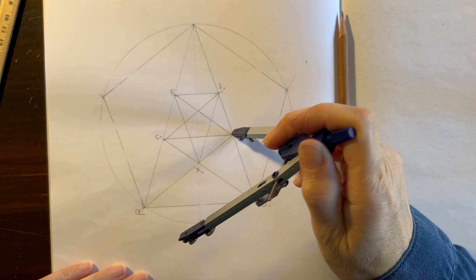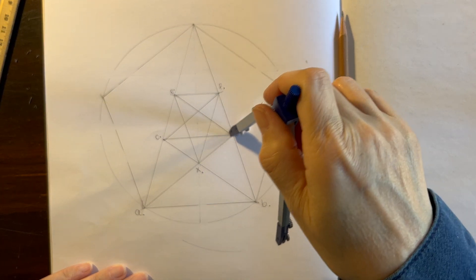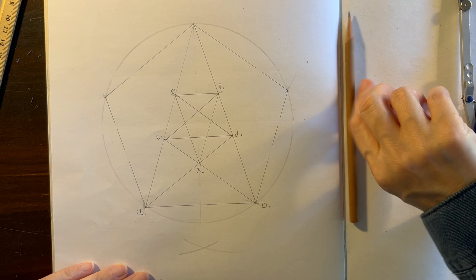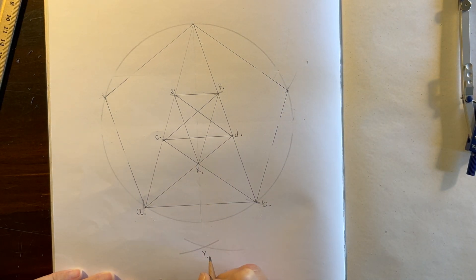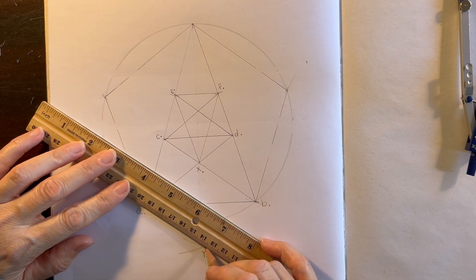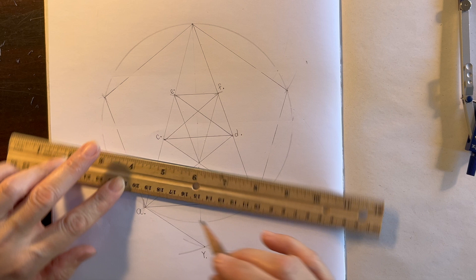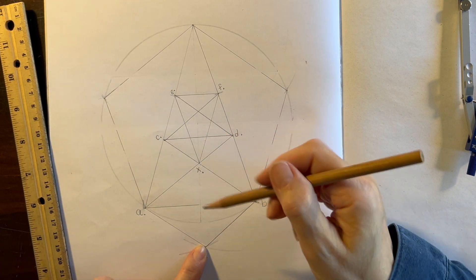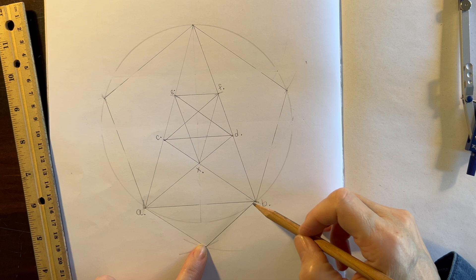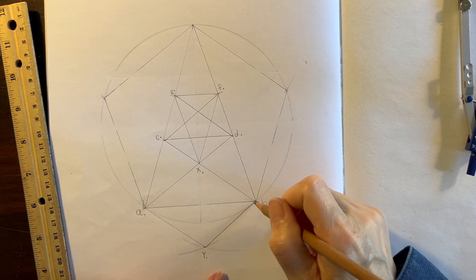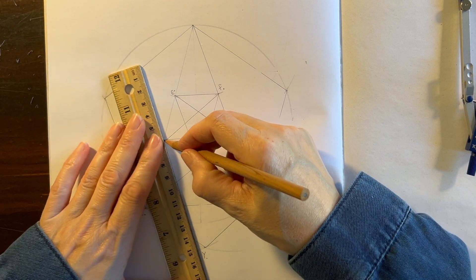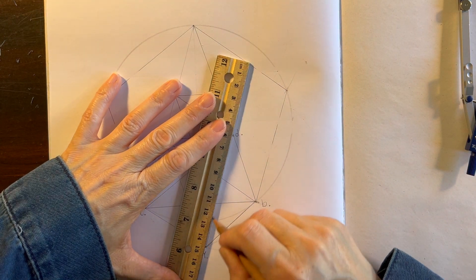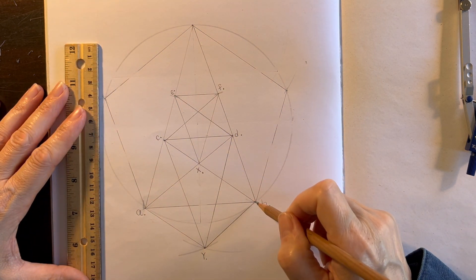Now our compass is still set at the distance between A and B, but now we've set it at C and D and swung arcs below A and B. And where those arcs cross, we're going to label it Y. And we're going to start with Y and A and then Y and B. And we're creating another star formation that's below our first star. We've created a pentagon. Now we want to connect point C to Y and D to Y. And there we go, we have another star. They're upside down stars. And you can see the pentagons look like they're facing upwards.